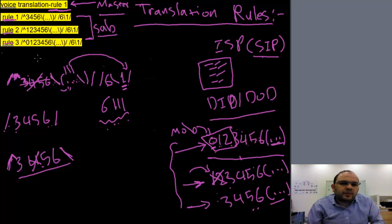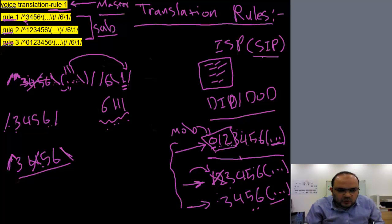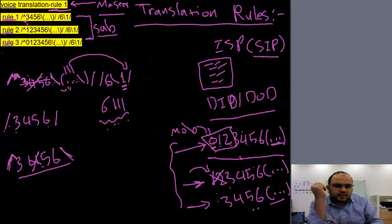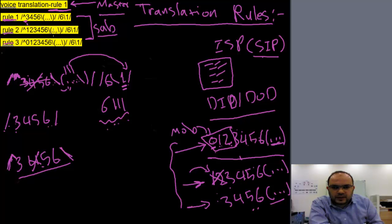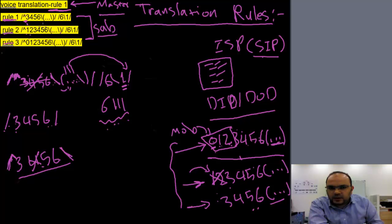If a caller is inside the country but in a different city — in Saudi Arabia you dial 1, 2, 3, 4, 5, 6, 1, 1, 1 — then translation rule number two (sub translation rule number two) takes over. The first rule is not matched, the second one matches. It strips off 1, 2, 3, 4, 5, 6, takes the remaining 1, 1, 1, puts it in set one, and adds 6 before it — resulting in 6, 1, 1, 1.